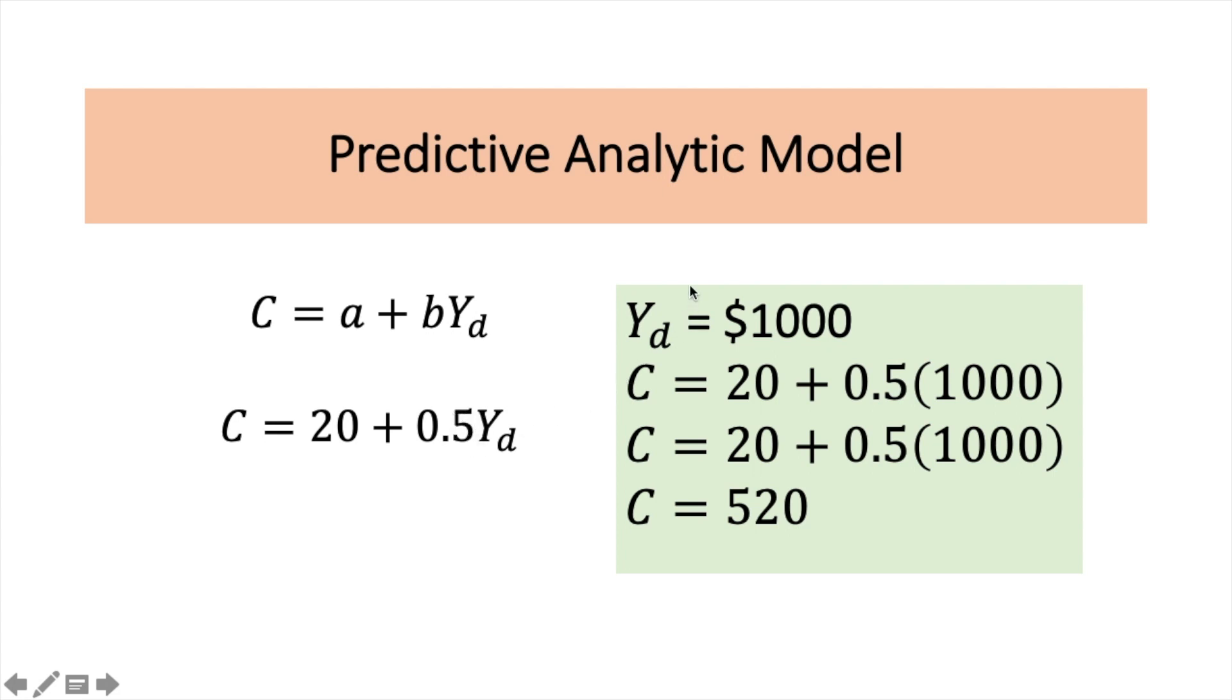So you can see if I have an amount of disposable income, let's say it's 1,000, and I plug in into this function. So you can see 0.5 times 1,000 will be 500 plus 20. So consumption will equal to 520. So we can see that from this predictive model, someone with an income of 1,000 disposable income will consume their portion of income worth of 520.